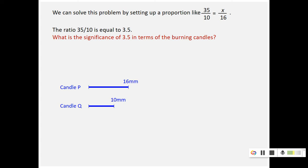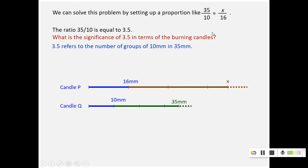When candle Q has burned 10, candle P has burned 16. So what is this 3.5? If you look, 20, 32, 30, 48, 35 X. So can you see the relationship between 35mm and the 10mm? What it really means is 3.5 refers to the number of groups of 10mm in 35mm. That means there are 3.5 groups of 10mm in 35mm. That's the meaning of 3.5.